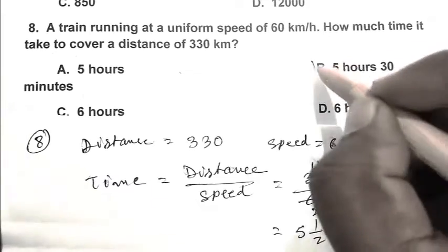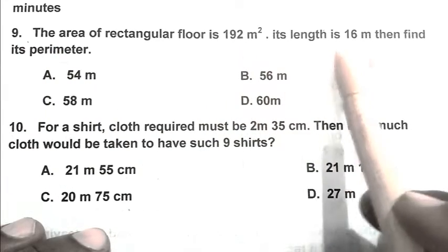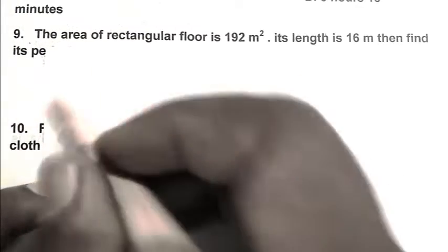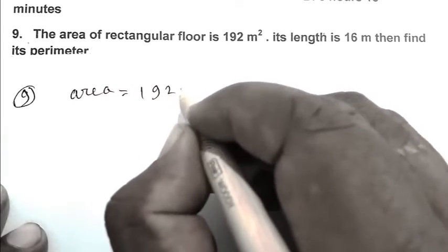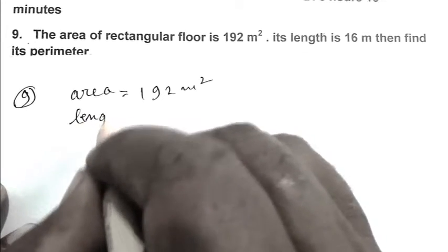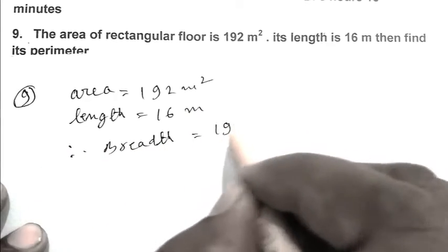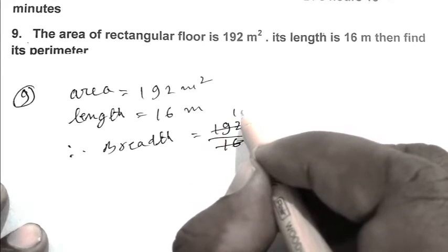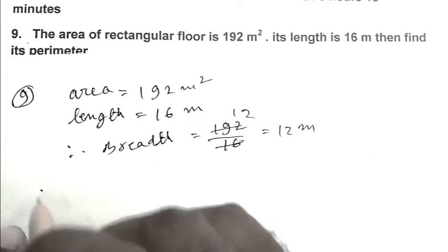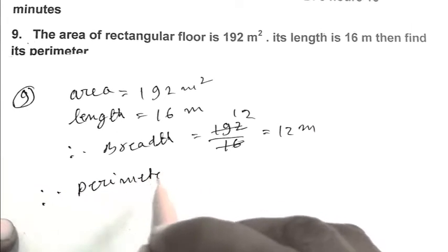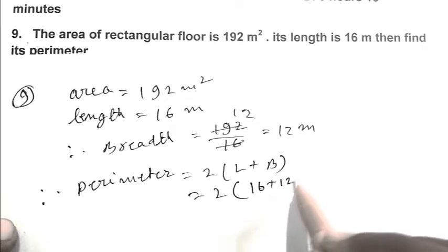Question number 9: The area of a rectangular floor is 192 meters square. Its length is 16 meter, then find its perimeter. So friends, area that is 192 meters square, length 16 meter, therefore breadth: 192 upon 16 equals 12 meter. So friends, perimeter, that is 2 into length plus breadth, that is 2 into 16 plus 12, equals 2 into 28, that is 56 meter. So friends, B is the right answer.